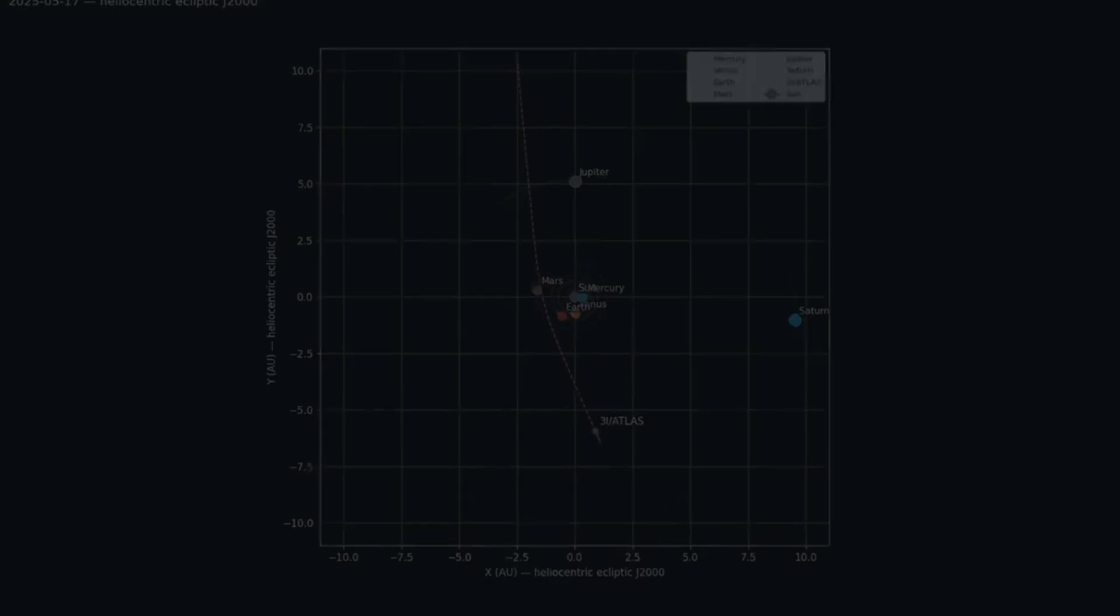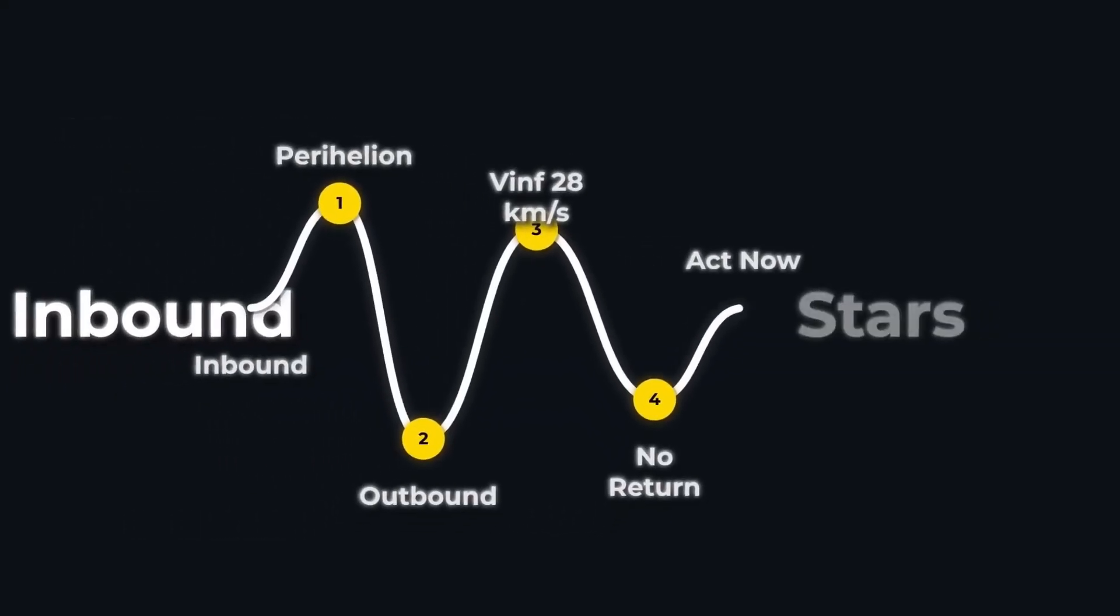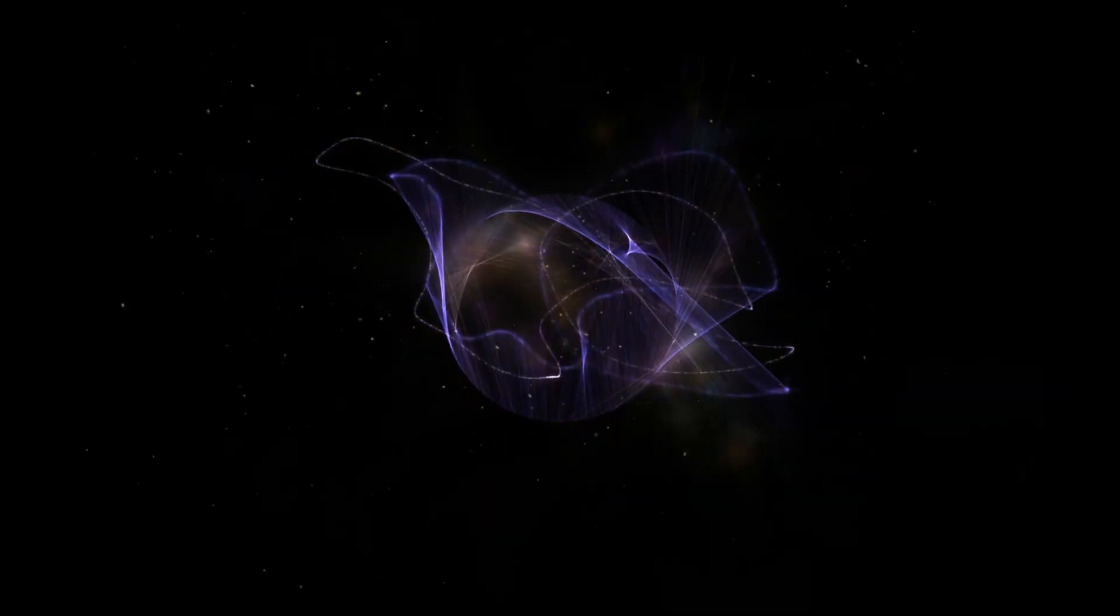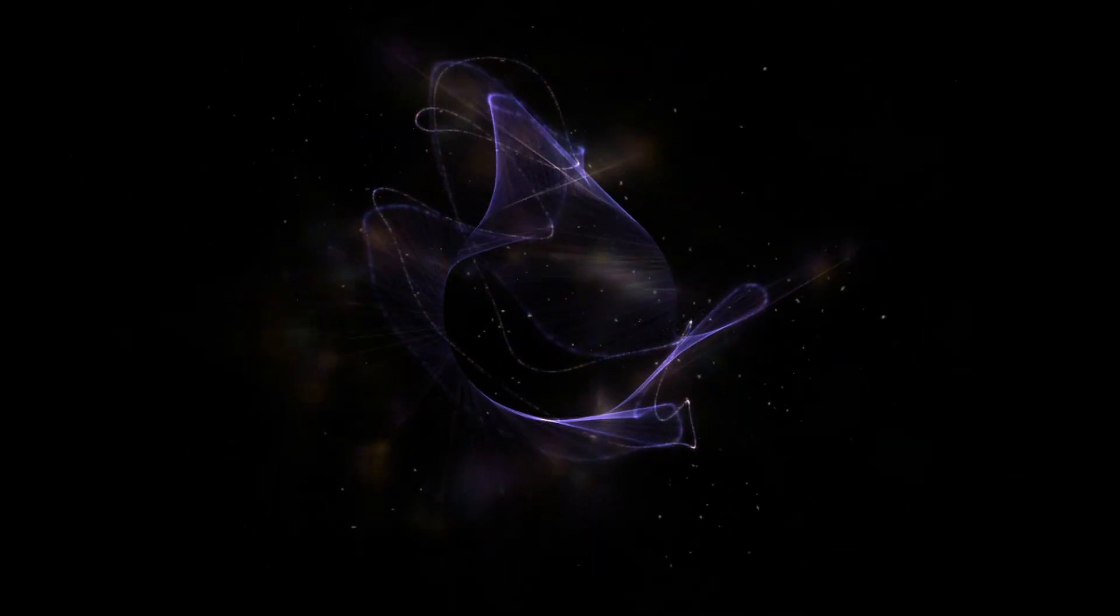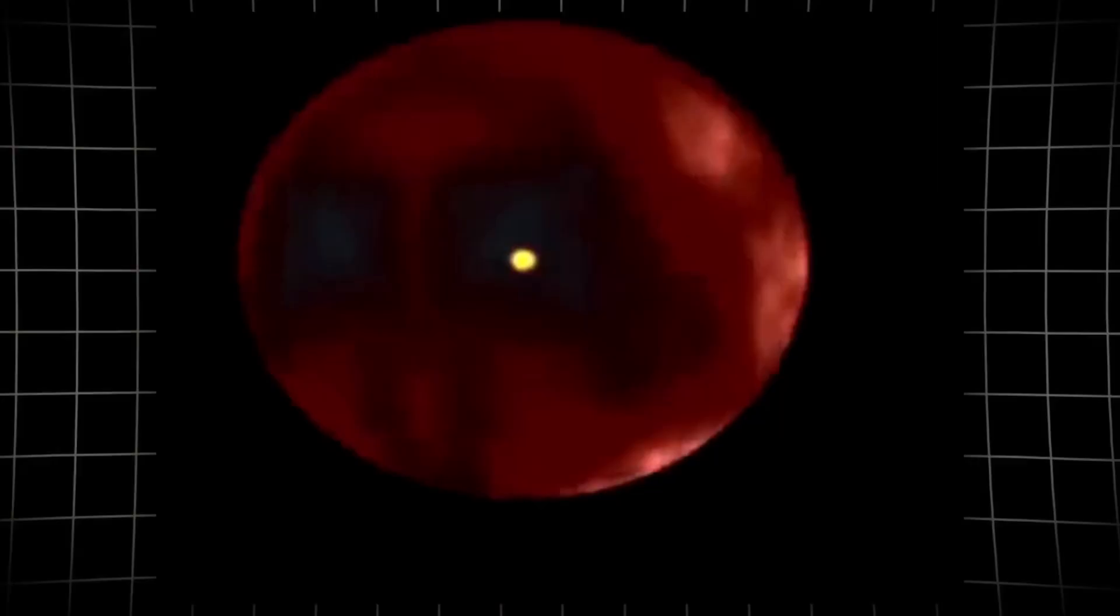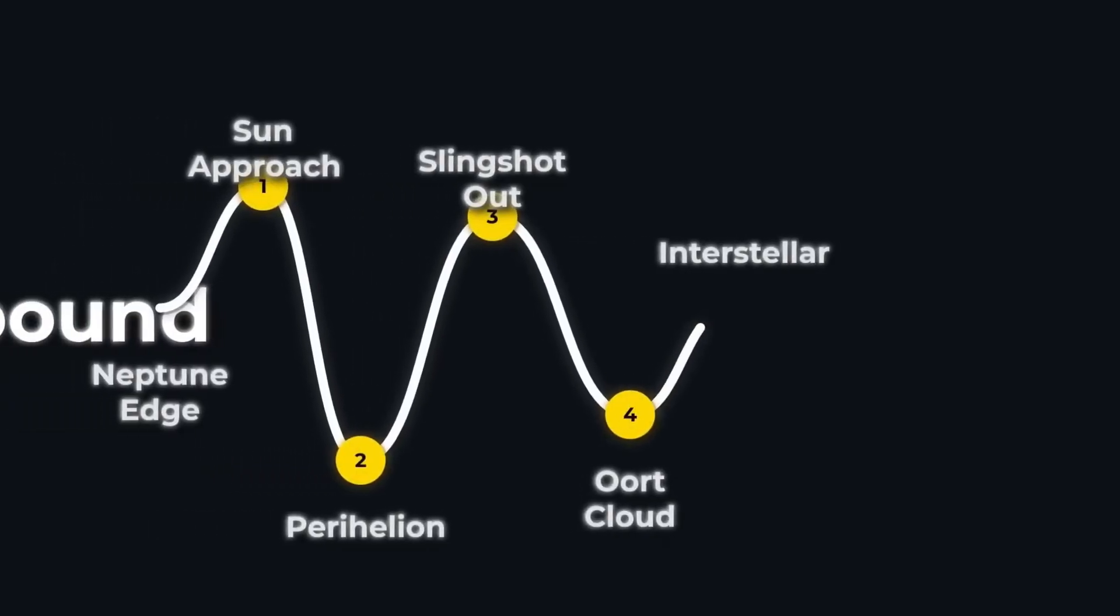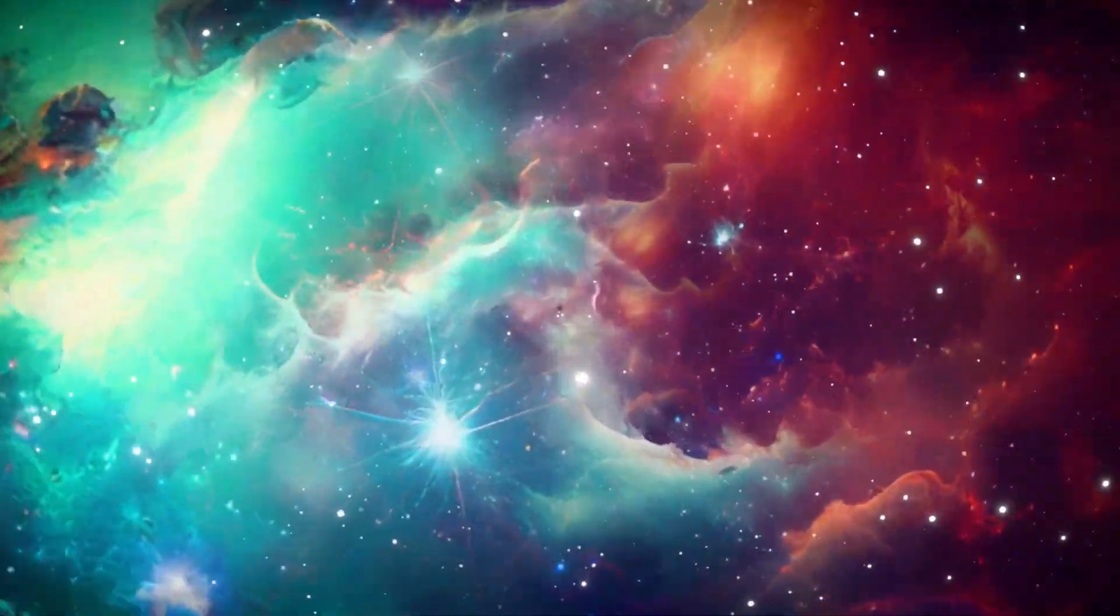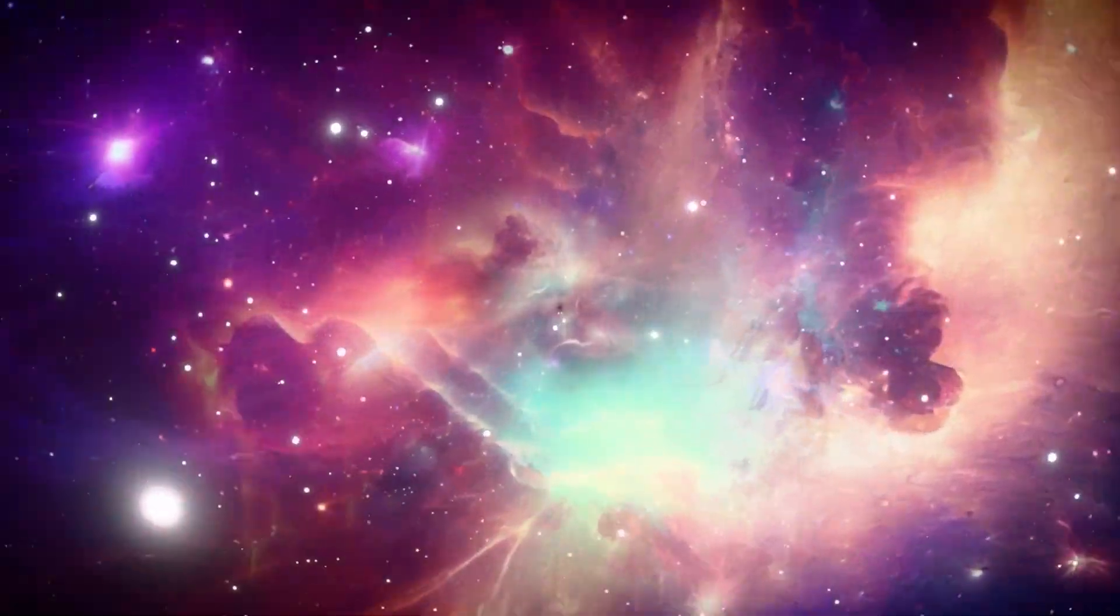The defining feature of this hyperbolic escape is its absolute finality. Once 3I Atlas completes its arc around the sun, it will not linger. There is no gravitational leash to pull it back. Its outbound velocity will remain positive—an astronomical one-way ticket to interstellar darkness. This isn't just a technicality; it defines the fierce urgency of the scientific response. Every observation, every spectrum, every image must be captured now, before the window closes forever.